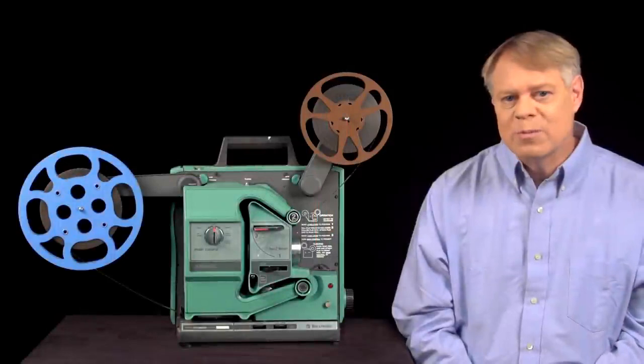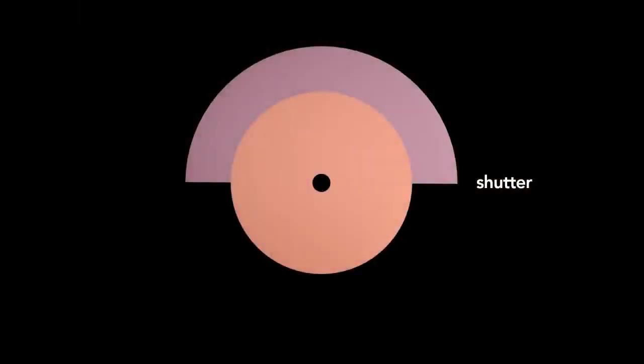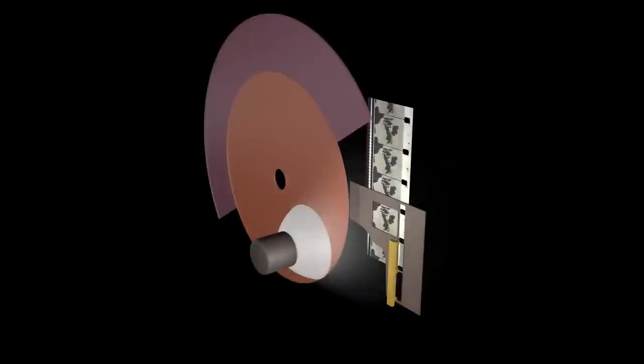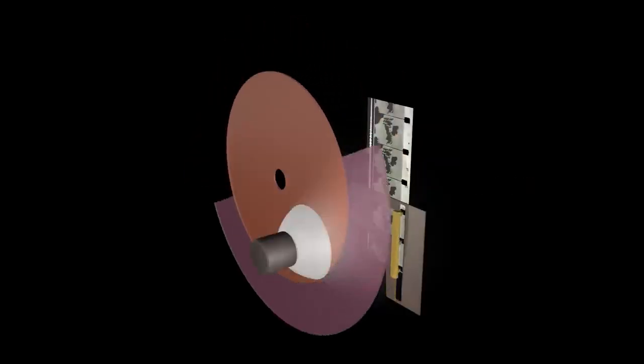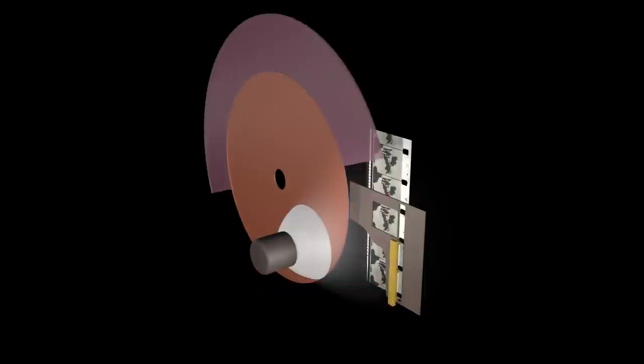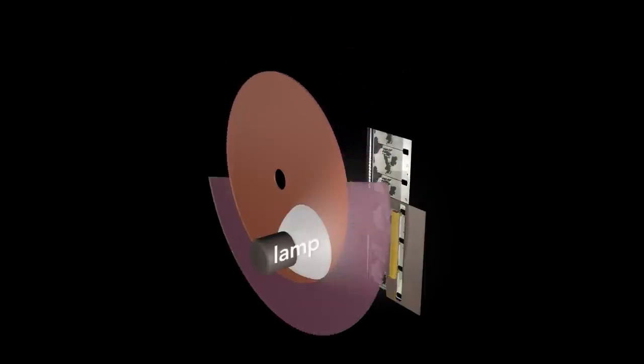The shuttle transports the film so that it's stationary most of the time and quickly advances to the next frame. Though it is rapid, the film movement will still cause blur in the projected image. The blur is eliminated by a shutter. The shutter is a disk with a blade that protrudes from half the circumference. The other half is open. The shutter rotates once every frame and is synced so that the shutter blade blocks light from the lamp while the shuttle is advancing the film. This prevents the projection of film motion on the screen.